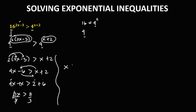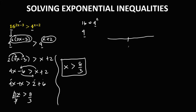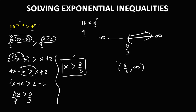Therefore x is greater than 8 over 3. On the number line, 8/3 is between negative infinity and positive infinity. Since x is greater than 8/3, all numbers to the right of 8/3 satisfy the inequality. In interval notation, the solution set is (8/3, positive infinity).